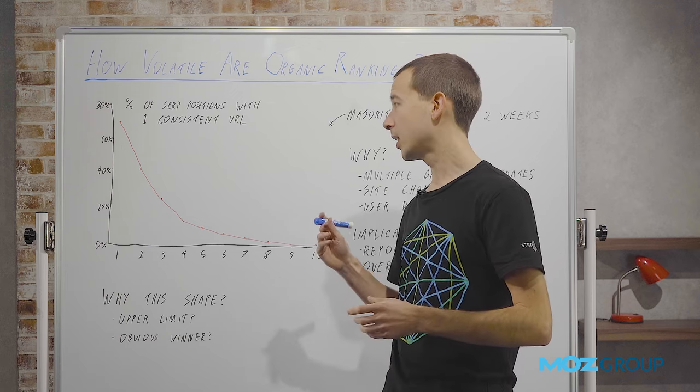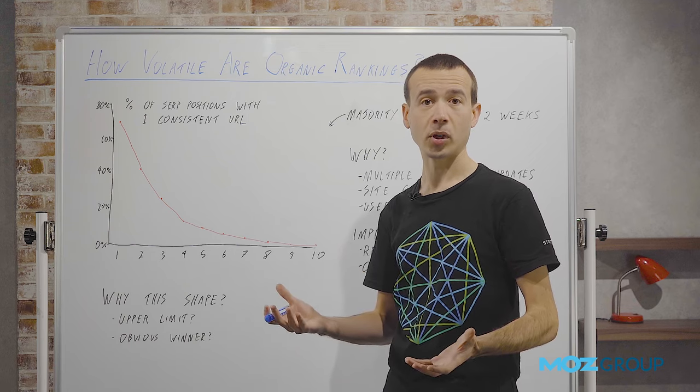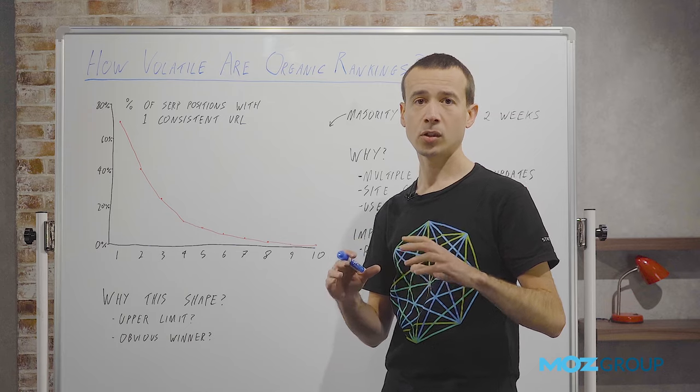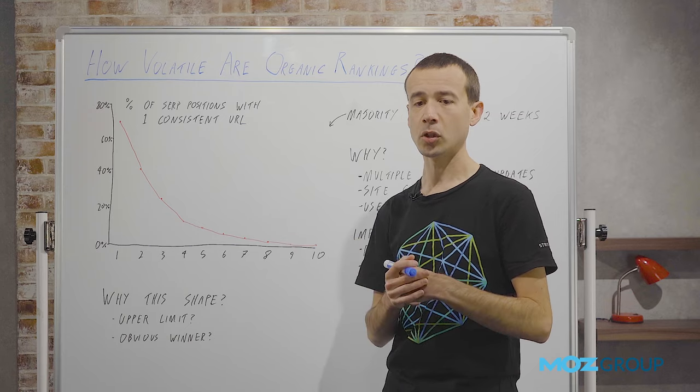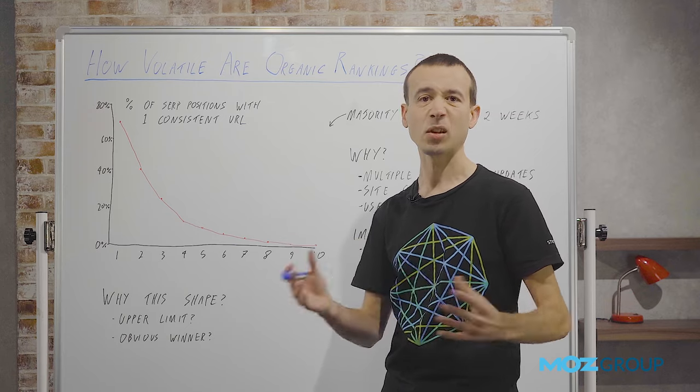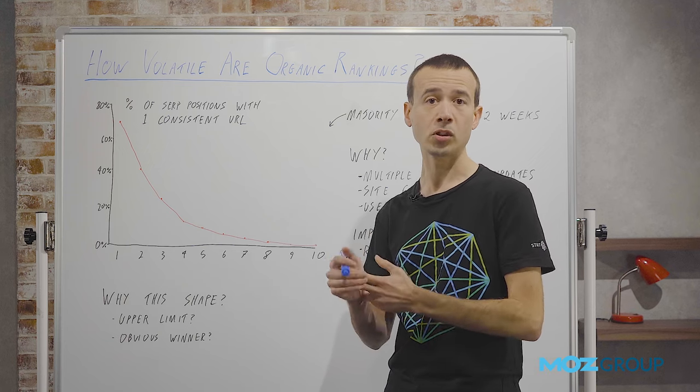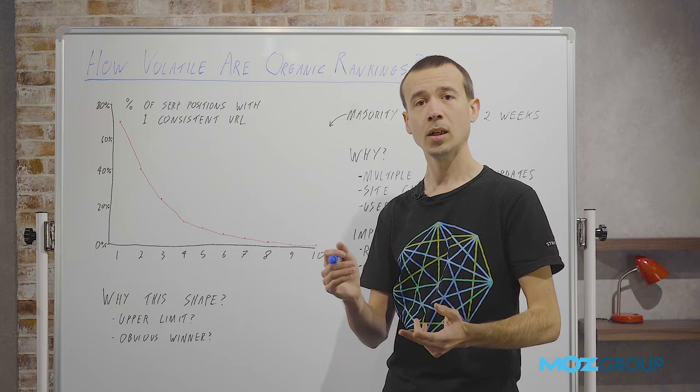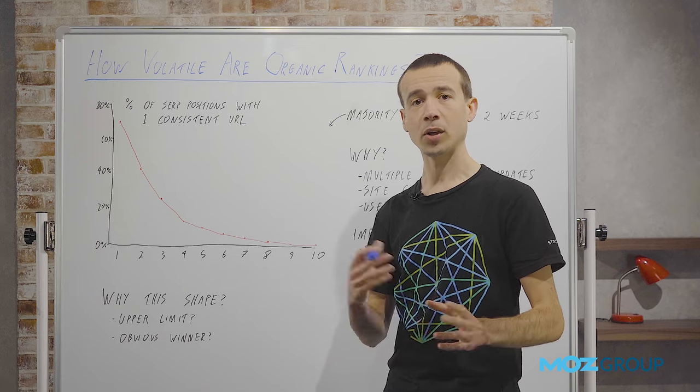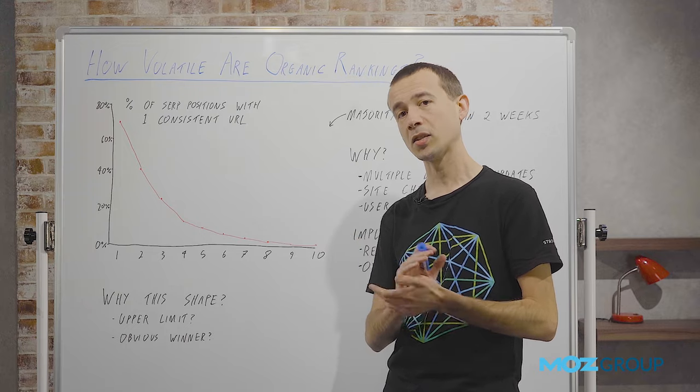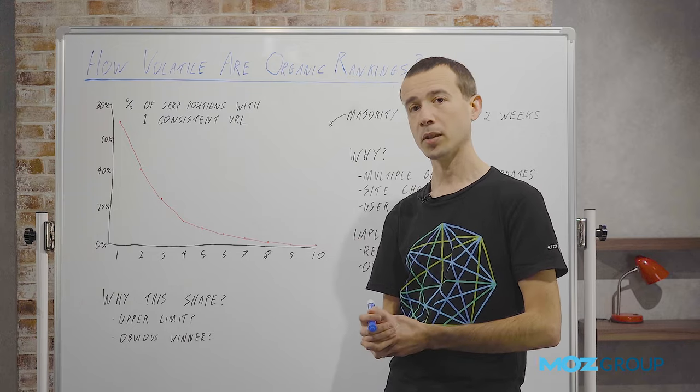This is all taken from Stat, our enterprise rank tracking platform, and it's the Mozcast corpus tracked in Stat. Mozcast, you might have heard of, is 10,000 head terms. In this case I'm tracking it in two suburban locations, one in the US, one in the UK, and on smartphone and desktop. So 40,000 total SERPs per day, and in this case over a two-week period.